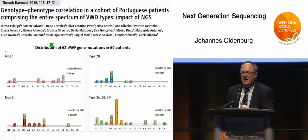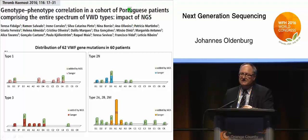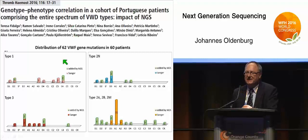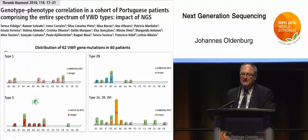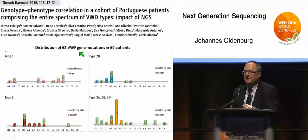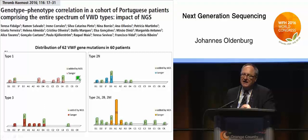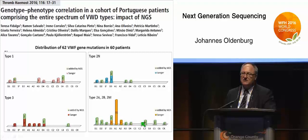Another example: a group around Fidalgo analyzed patients with von Willebrand disease in a Portuguese study. They had in total 60 patients with different types of von Willebrand disease—type 1, type 2N, type 3, and various type 2 subtypes. They identified a total of 62 von Willebrand gene mutations by this technology, and next generation sequencing allowed them to identify additional mutations not identified by Sanger sequencing, with those additional mutations contributing to the phenotype and causality shown in green color.